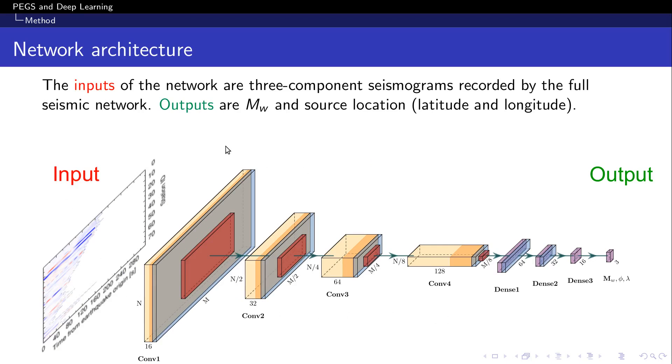We use a network architecture which is very simple, and it's based on a convolutional neural network, where the inputs are three images like this. Here I show only one, but there are three images, one for each component, vertical and two horizontals. And the output are three values related to magnitude, latitude and longitude. The convolutional part of the network will perform feature extraction, while the last part, which is made of three fully connected layers, will perform high-level reasoning on the extracted features to come up with an estimate of the three quantities of interest.